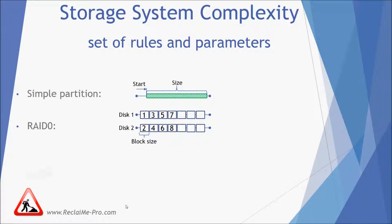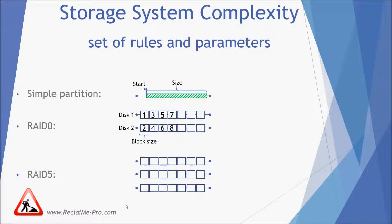RAID 5 obeys the following rule. First, data is cut into blocks of the same size. Then the blocks are written to the member disks one by one. Additionally, one more block containing parity calculated over some part of the data is written to the disks according to a particular pattern. The rule adds parameters like how parity is calculated, disk order, block size, and period between parity blocks. Note that exactly the same description defines RAID 4 and RAID 3.